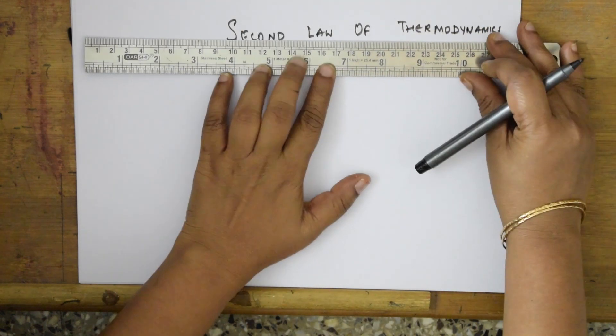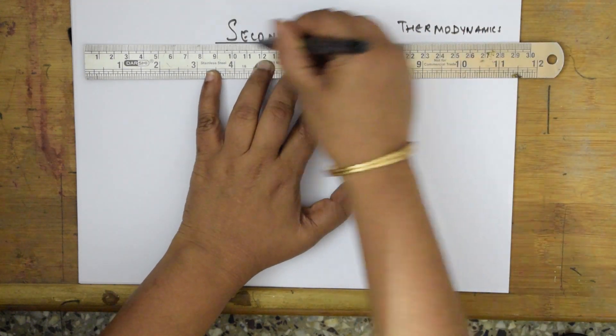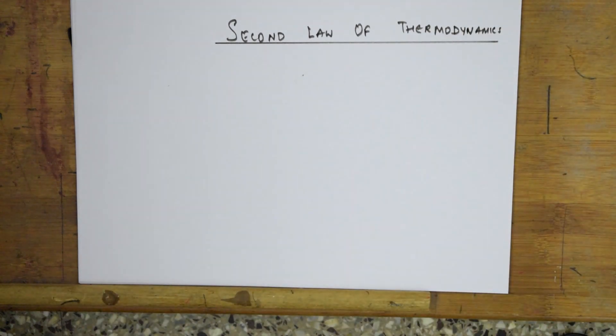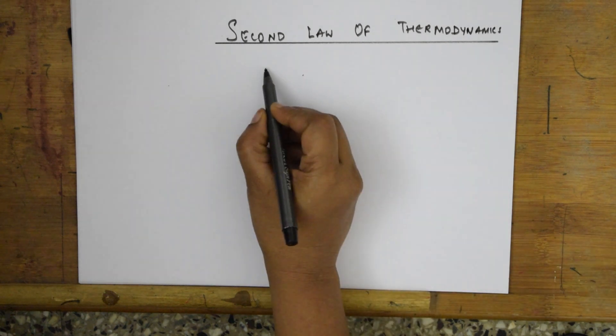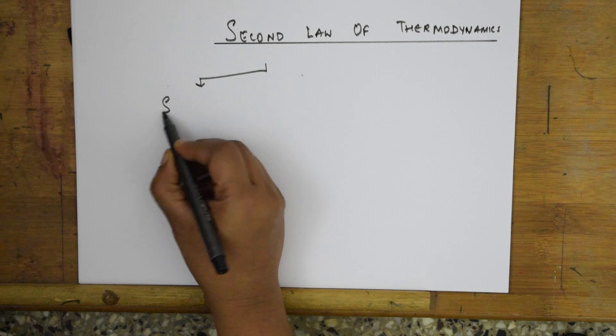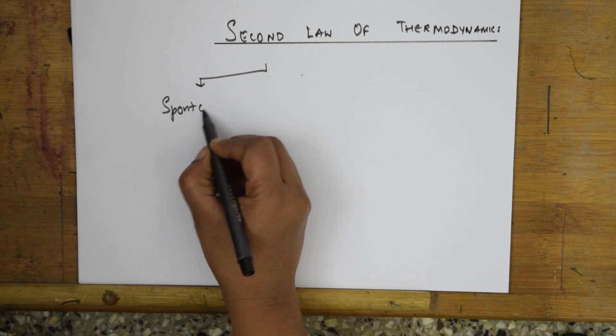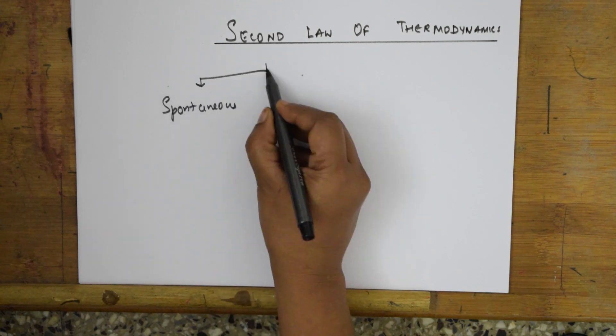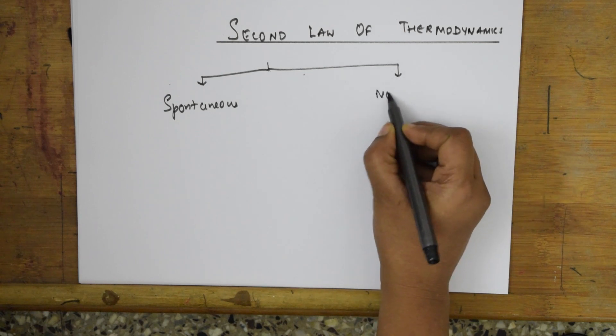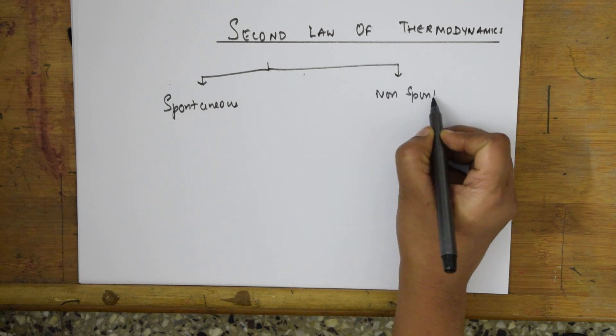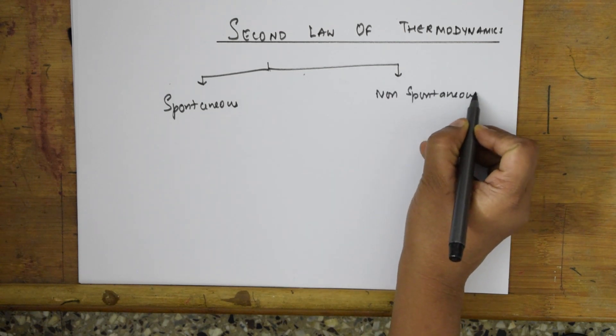Second law of thermodynamics - remember this, very important concept. I have done the first law of thermodynamics, zero-th law. I will be starting the second law now. Before going to the second law we will learn certain concepts. In this nature there are two types of processes - some processes are spontaneous in nature, some processes are non-spontaneous in nature.